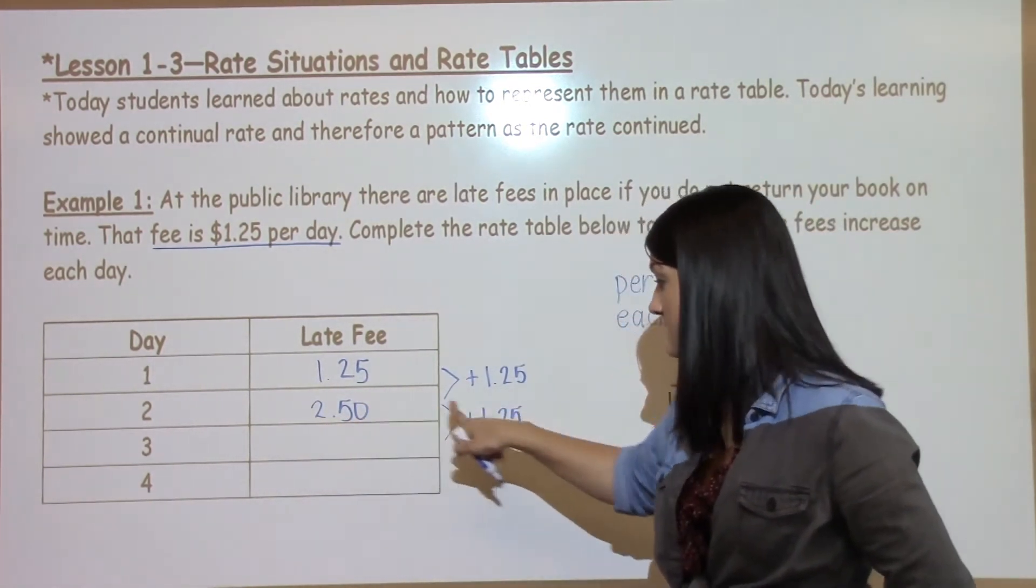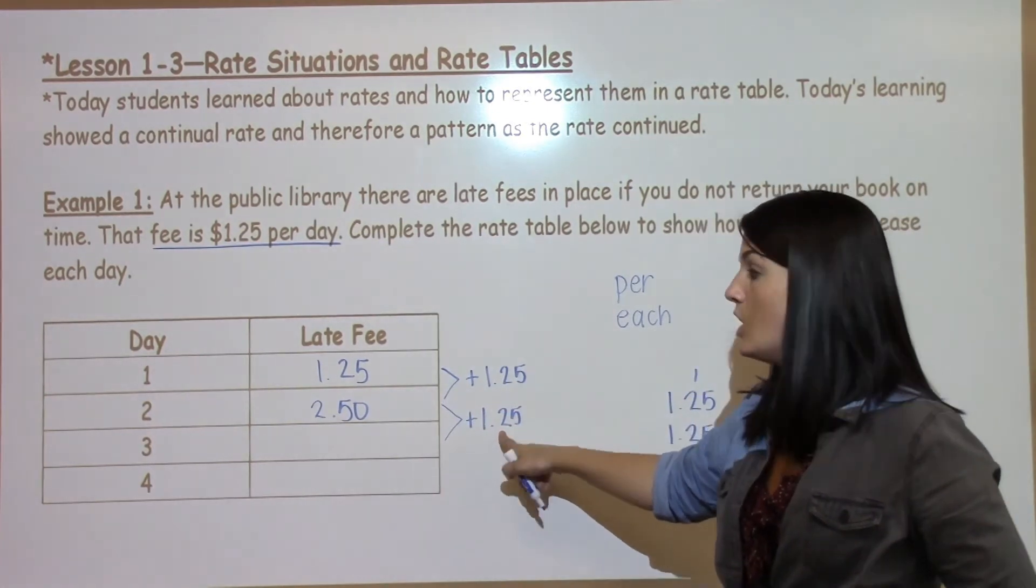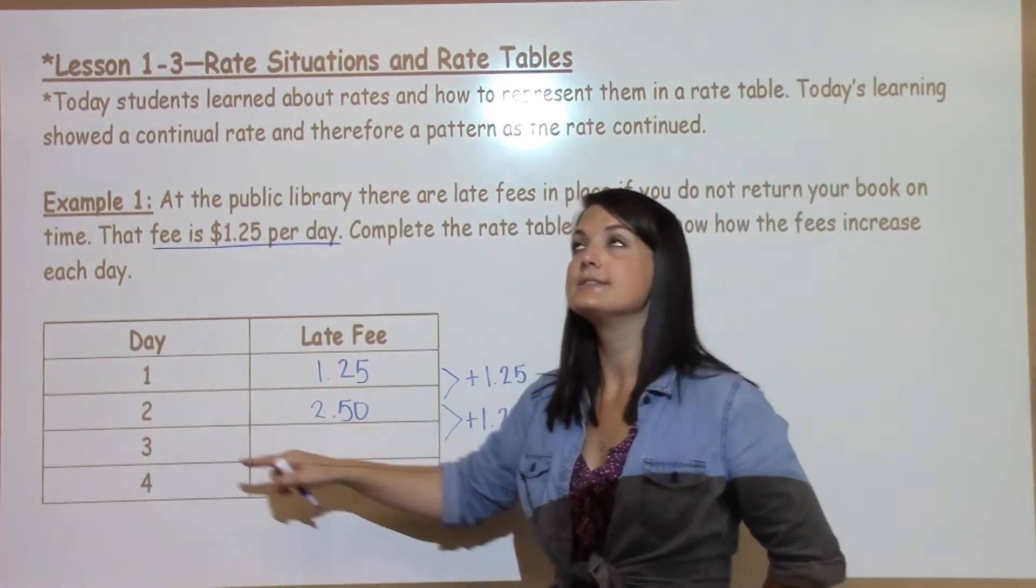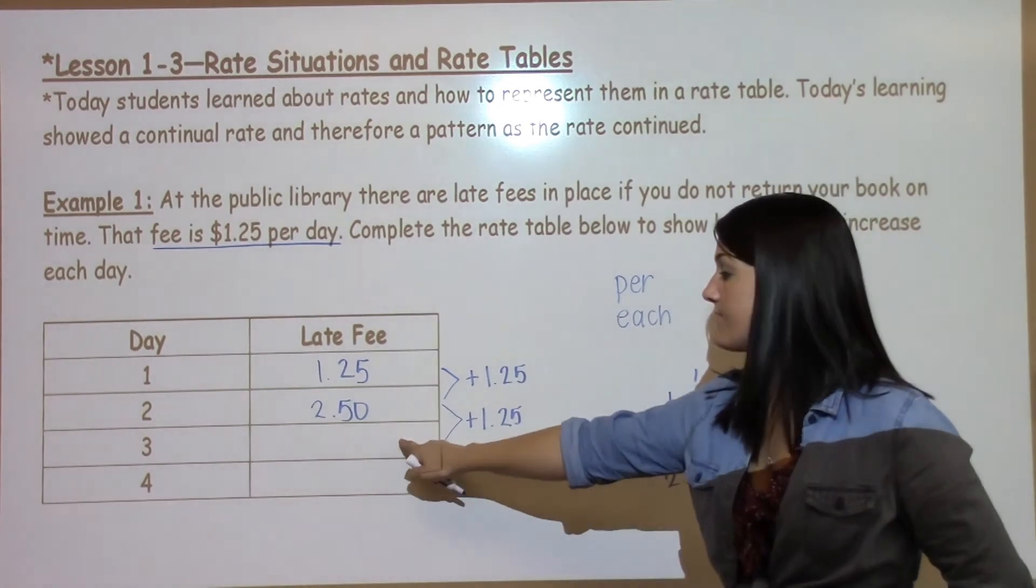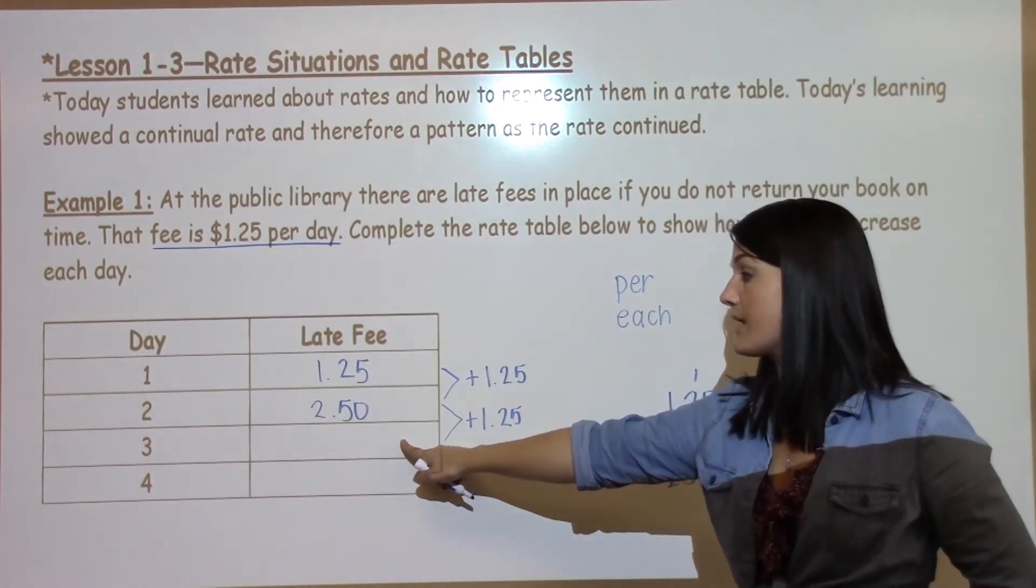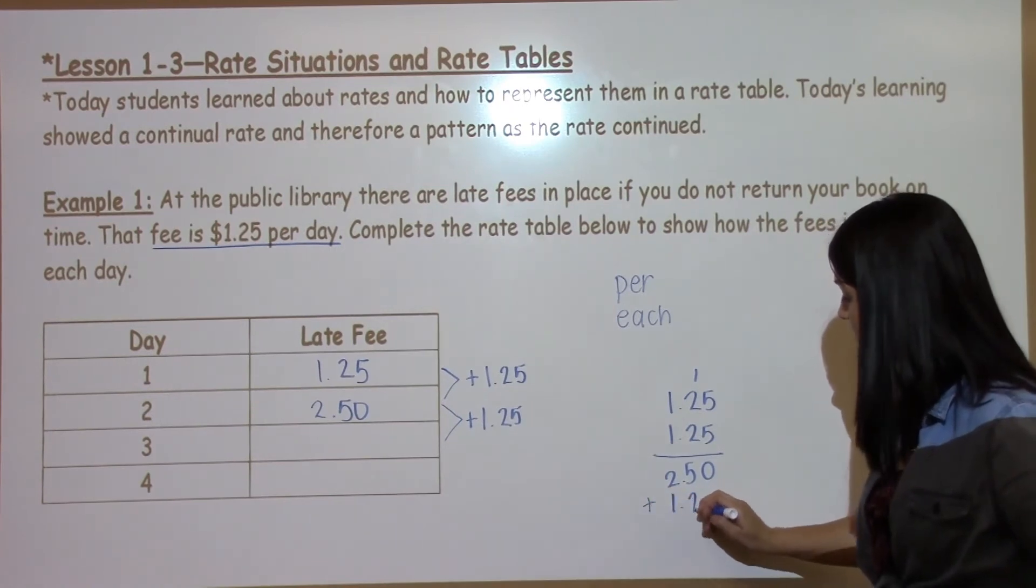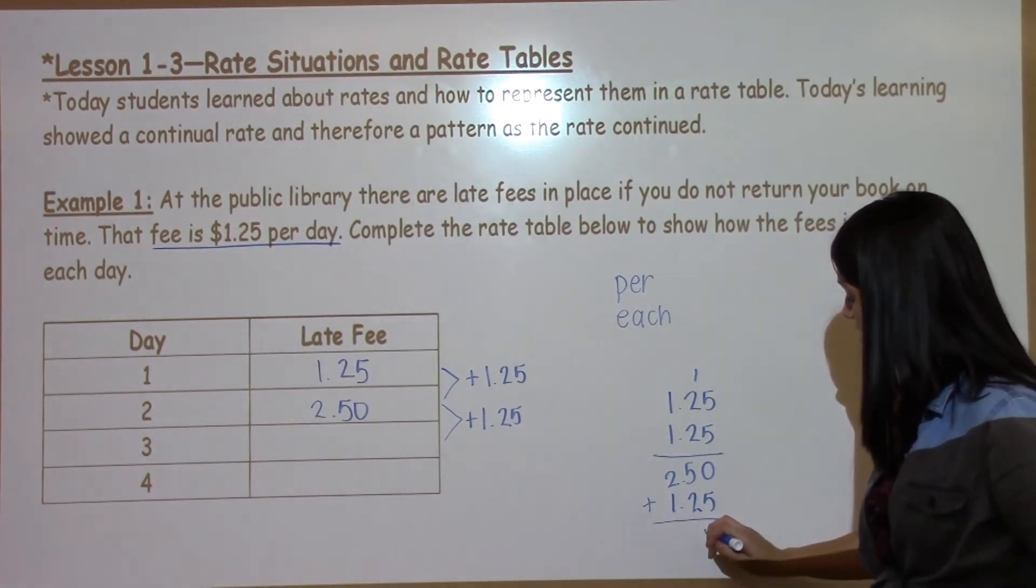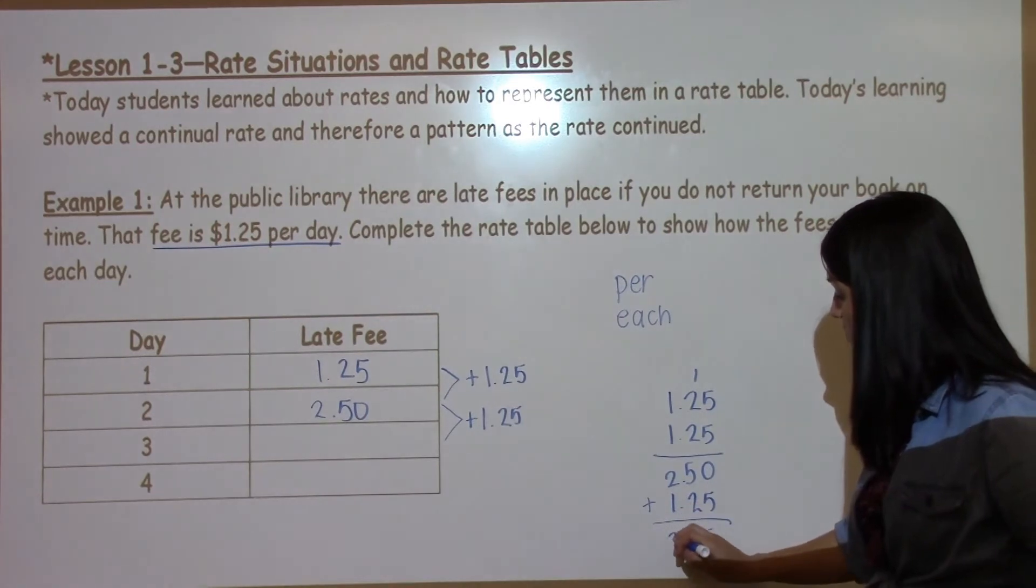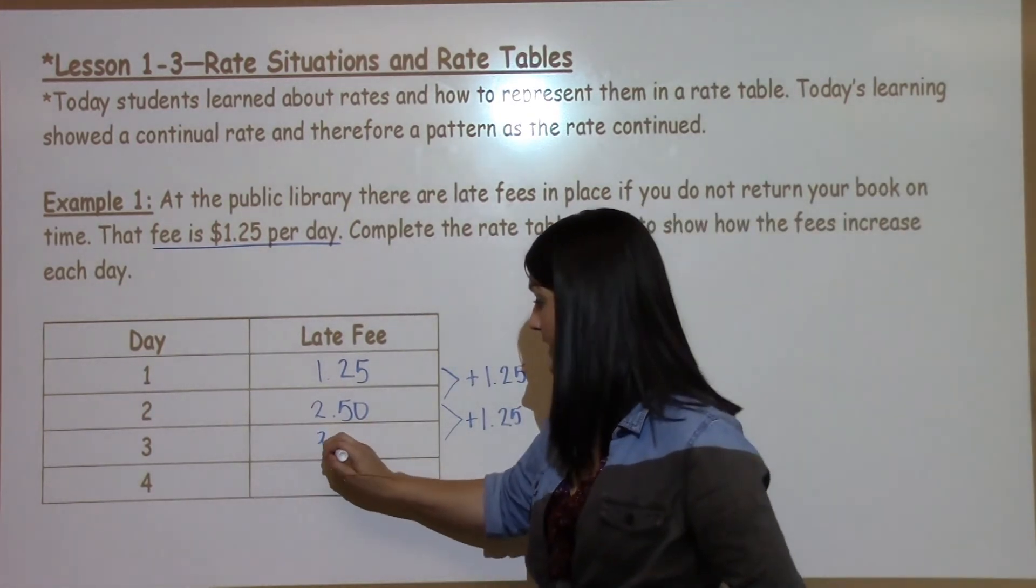I could take my $2.50 plus $1.25 or I could take 3 times $1.25 to find out what is the next unit in my rate table. So I'm just going to add on here since I already have some addition going. But you are of course more than welcome to use multiplication as well.